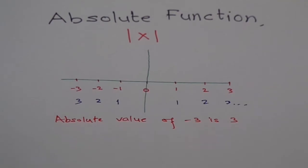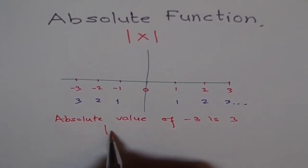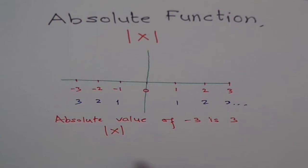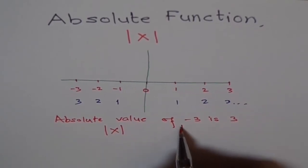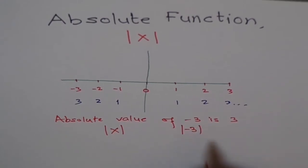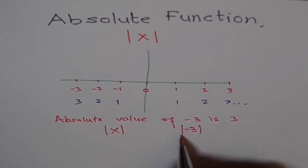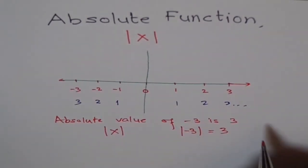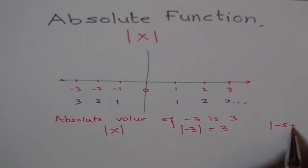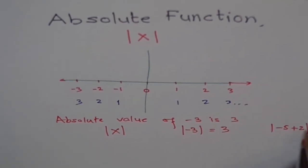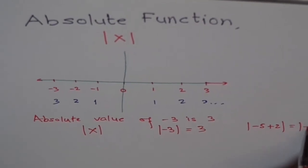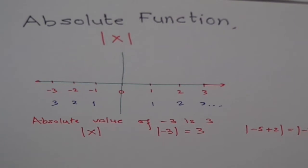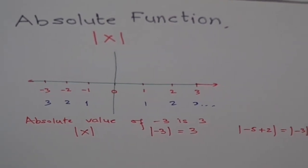We do have a way to write an absolute function. Instead of writing 'absolute' always, we denote it with two long vertical bars — for example, absolute X written as |X|. So absolute of minus 3, written as |−3|, is equal to 3. It basically reverses the sign if the sign is negative. Similarly, if we have an operation like minus 5 plus 2, the absolute value of that equals the absolute of minus 3, which is 3. So absolute value always gives you a positive value as output.